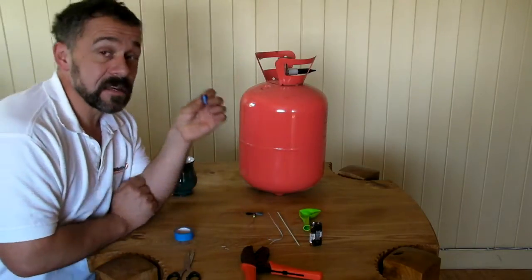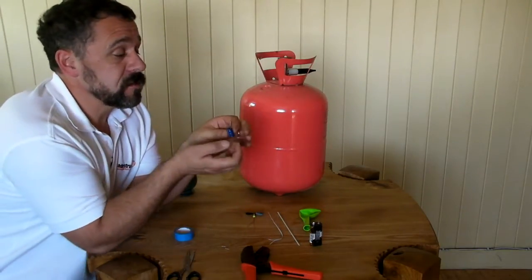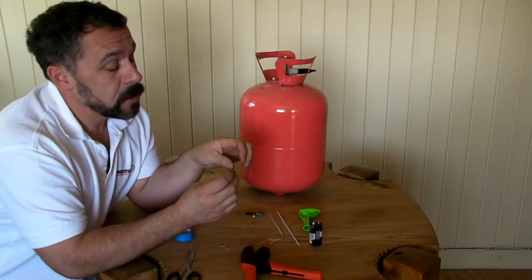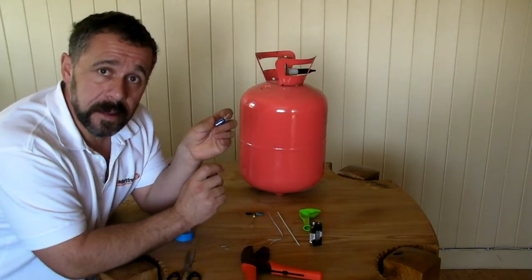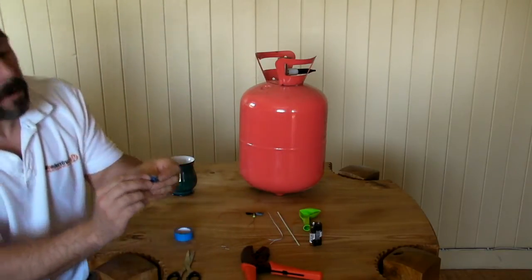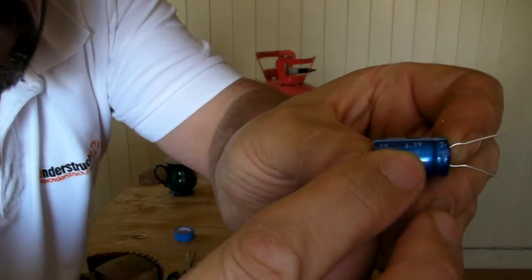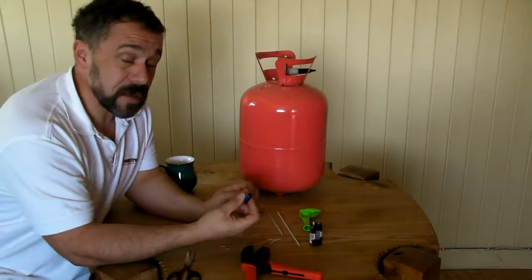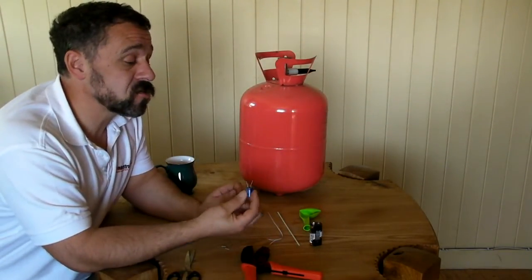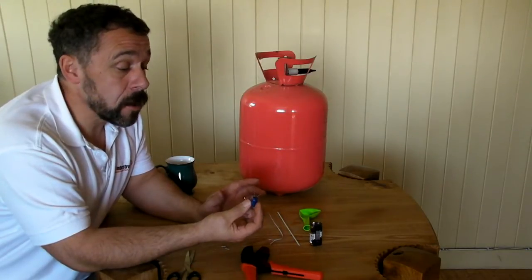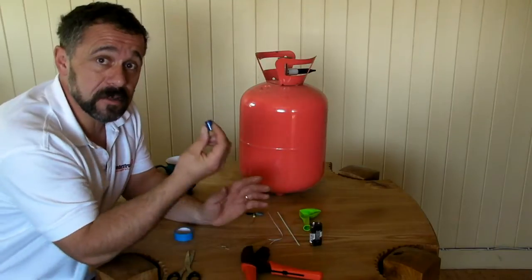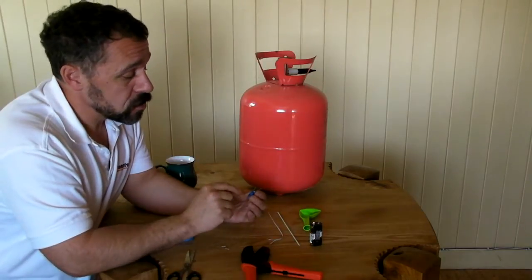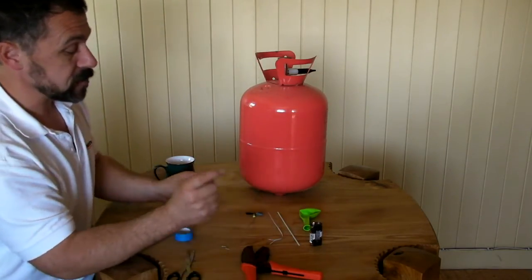Now we've also got here a super capacitor. This is what we're going to use to store the electrical energy, because batteries are too heavy for our balloon to carry. Now it's important you get the right specifications. This one is 2.5 volts, 10 farads. You don't want to get anything bigger than that, because the bigger ones can store quite large amounts of energy, some of them large enough to actually kill you. This one is nice and safe. We can charge this up and it's not going to cause you any harm. So 2.5 volts, 10 farads, that's what you need for this project.